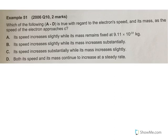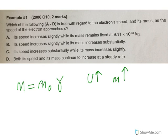There's a couple of examples on there, and also there's some videos on this stuff as well. A couple of examples in your notes there, Examples 50 and 51. So we'll have a look at those now. Alright, here we are in 51. Which of the following A to D is true with regard to the electron's speed and its mass as the speed approaches c?